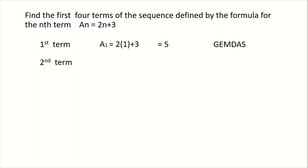So to solve our second term, the 2 we have here is derived from the position of our term, which is 2. So 2 times 2 plus 3 is equal to 7. For our third term, we have 2 times 3 plus 3 is equal to 9.